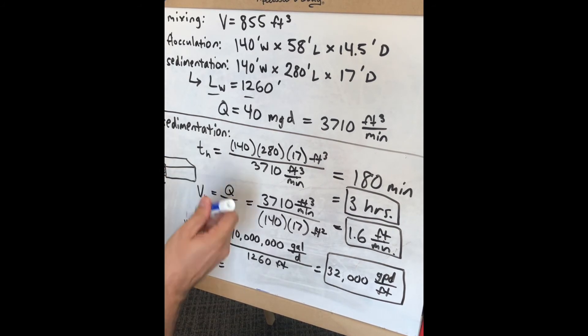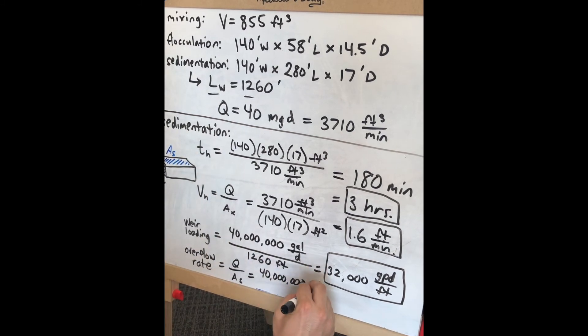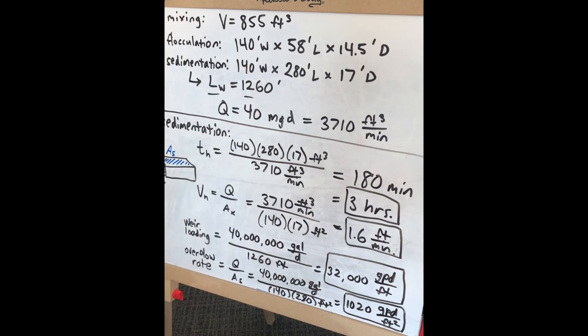The overflow rate equals the flow rate divided by the surface area, giving 1020 gallons per day per square foot.